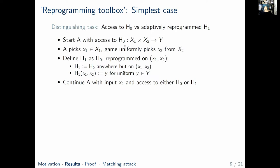After having queried the original oracle for some time, the adversary A picks its own position x1, marking the first half of the position. The game completes this to a full reprogramming position by uniformly picking x2 from the second set. We then define H1 as H0 but reprogrammed on this position: H1 coincides with H0 everywhere except on this particular position, where it is defined to be a fresh, uniformly random value. The second half of the reprogramming position is forwarded to A, which then continues with access to either H0 or H1.